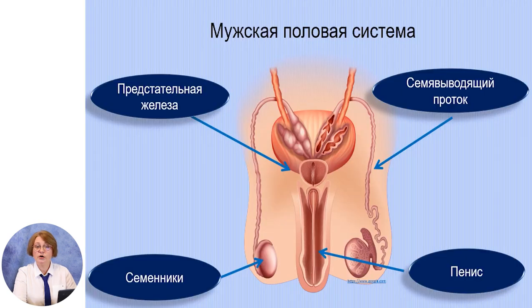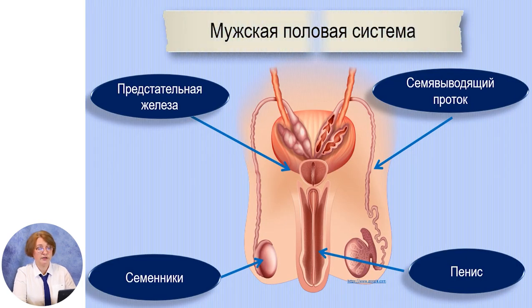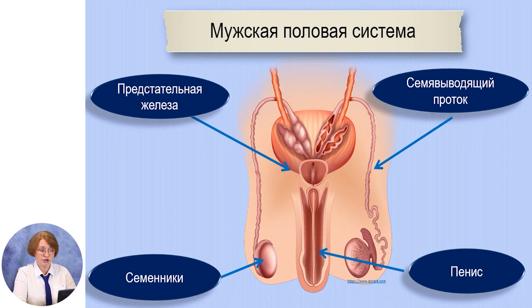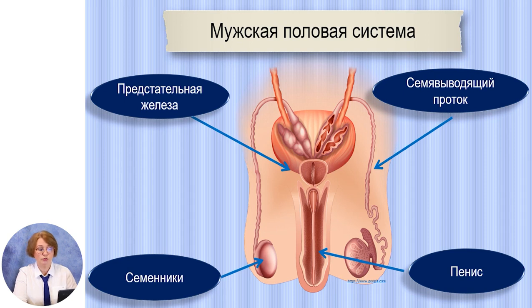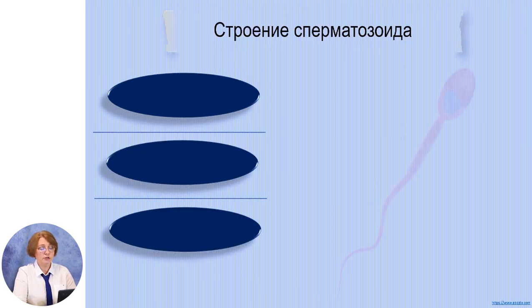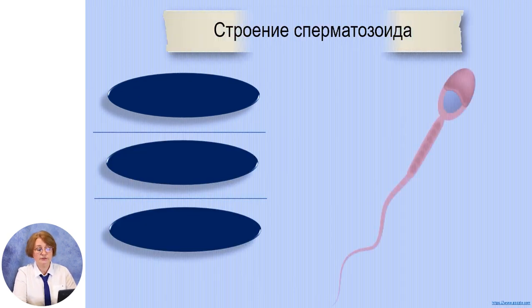Выясним, как устроена мужская половая система. Органы мужской половой системы – это семенники. Мы знаем, что это половые железы. Также есть такой орган, как предстательная железа. От семенников отходит семявыводящий проток, который направляется в пенис.